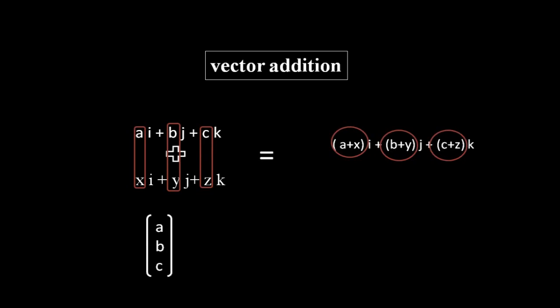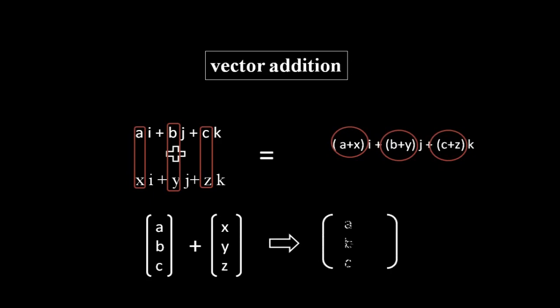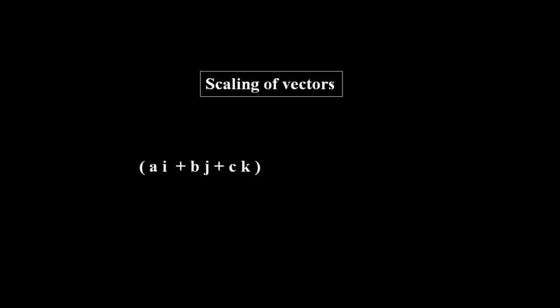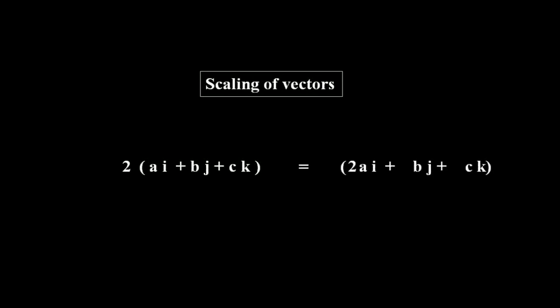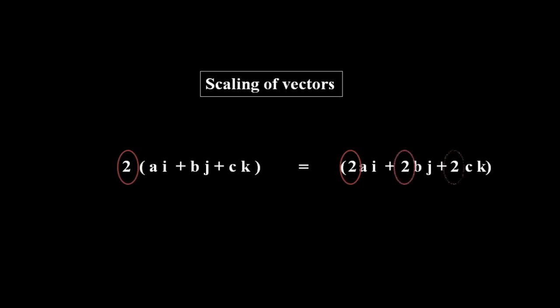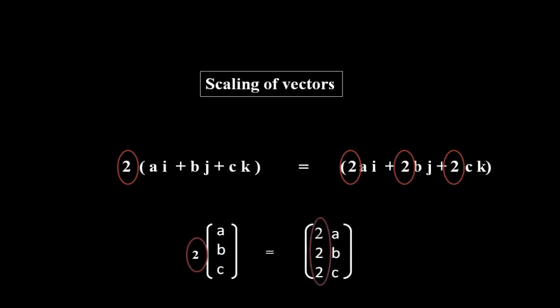The same applies when we add two column matrices. The scaling of vectors works like their sum: if we scale a vector by a scalar, the coordinates of each unit vector are scaled by the same scalar. Similarly, the scaling of column matrices with a scalar is similar to scaling the coordinates of their basis vectors by the same scalar.